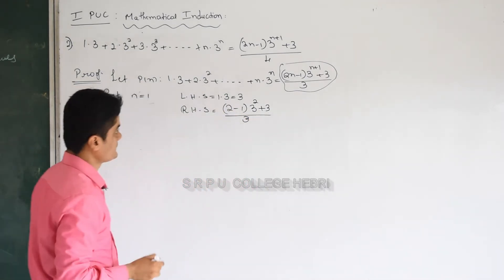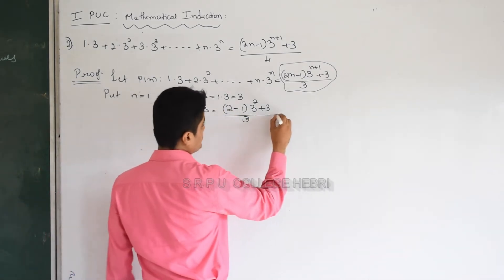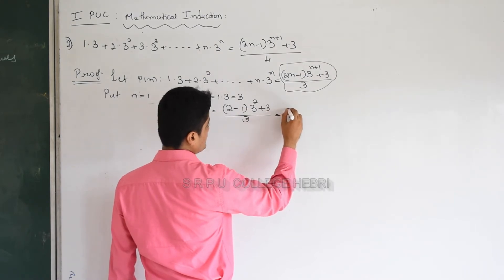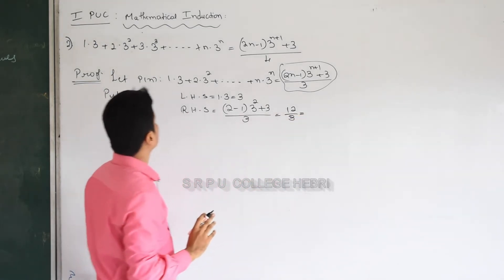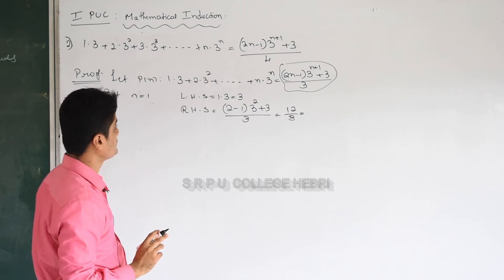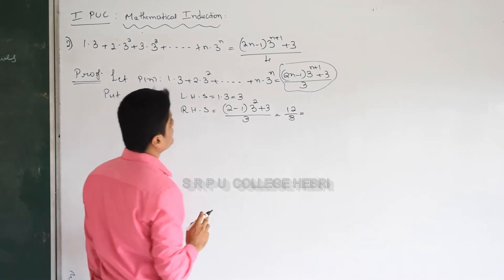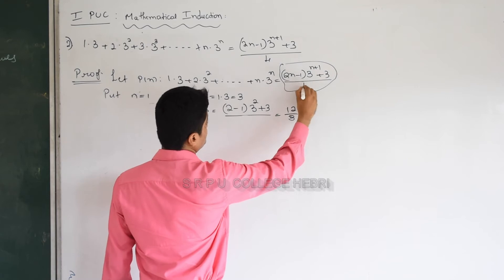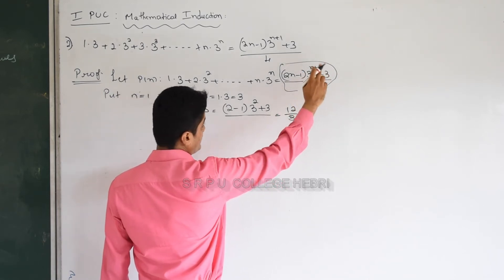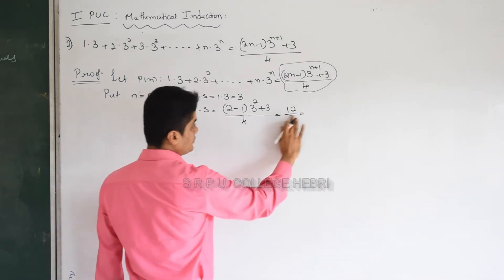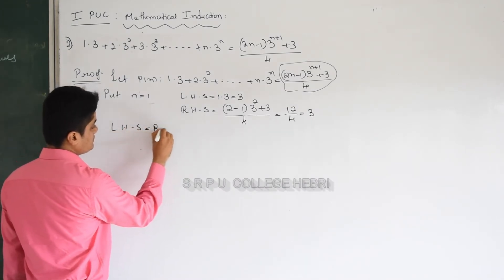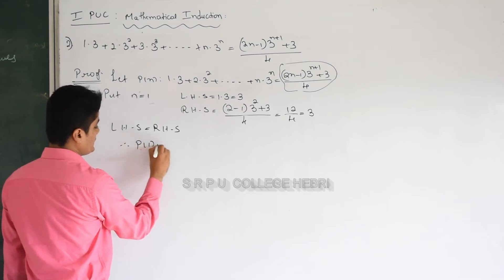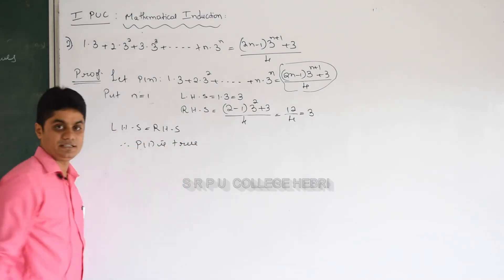For n equal to 1 on the right hand side: 2(1) minus 1 is 1, then 3², which is 9, plus 3 gives 12 divided by 4 equals 3. So RHS equals LHS. The right hand side is 2n minus 1 into 3^(n+1) plus 3 divided by 4, denominator is 4, so 12 by 4 equals 3. Therefore P of 1 is true. First step is done.